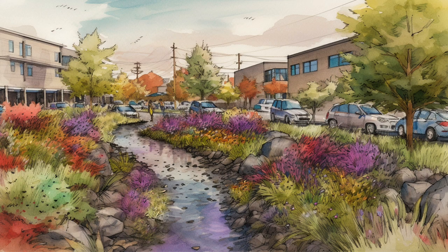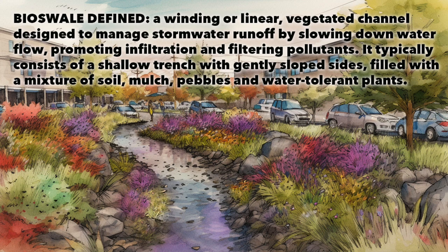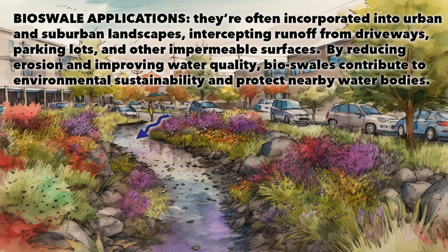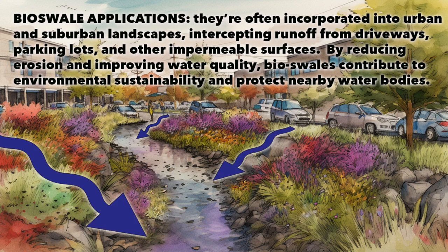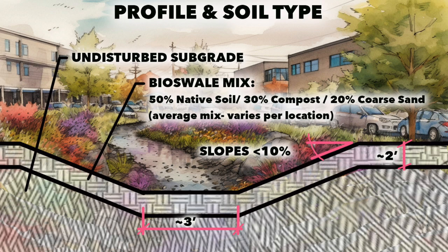Before we get started designing our bioswale, let's first talk about what a bioswale is and what a rain garden is and what they can do for you. A bioswale is defined as a winding or linear vegetated channel that helps manage stormwater runoff. They're very good at filtering pollutants. These are typically used more in an urban or suburban landscape where they intercept water runoff from driveways, parking lots, or other impermeable surfaces. What I've drawn up here is a quick sketch of what a typical section through a bioswale would look like.